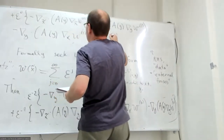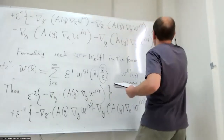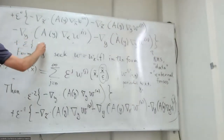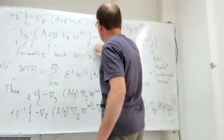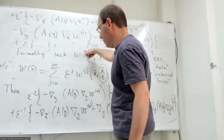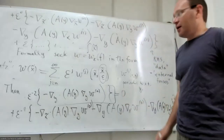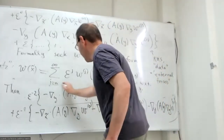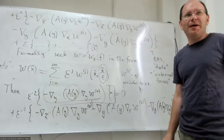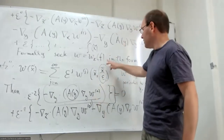At order ε^0 we also have terms like minus grad_{x̃} · (a(y) grad_y w_2) and similar cross terms, and then this equals f. On the right-hand side we have a function of x̃ of order ε^0. For this to satisfy the equation, by ellipticity of the matrix a, the leading-order equation at ε^{-2} implies that w_0 does not depend on y — it is a function of x̃ only.